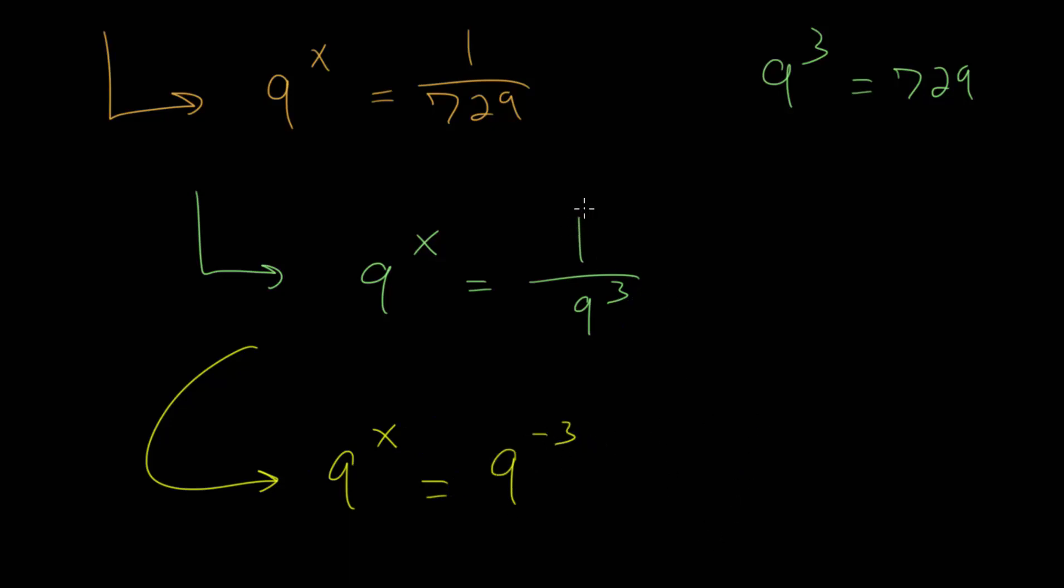Since notice that we are dividing by 9 three different times, we could write this as 1 over 9 times 9 times 9. And when we are carrying out repeated division, we use negative exponents to represent that.